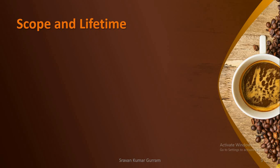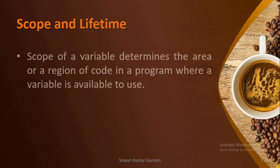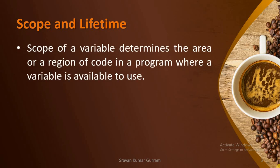Before starting the discussion about local variables, let us try to understand two important terms: scope and lifetime. Scope of a variable determines the area or region of code in your program where a variable is available to use — from where we can access a variable and from where we cannot. That is called the scope of a variable.